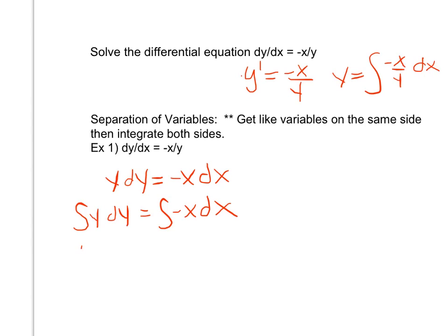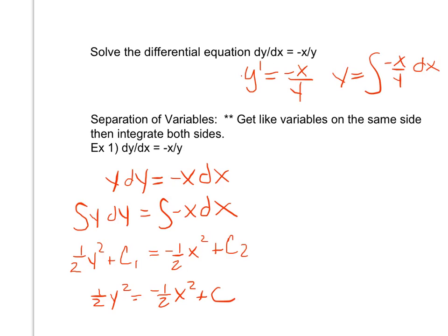Now I can integrate each side without the issue of having too many different variables. The integral of y gives one-half y squared plus c1, and integrating negative x gives negative one-half x squared plus c2. Since these c's represent random constants, subtracting one from the other still gives another constant c. So one-half y squared equals negative one-half x squared plus c.